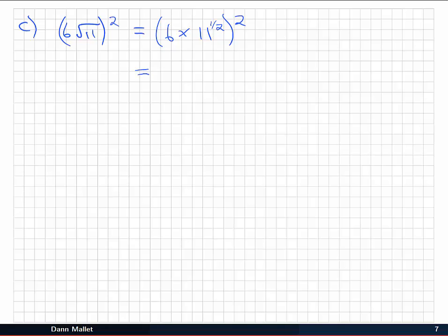I'll use my index laws to pull that 2 inside the bracket. I'll have 6 squared and 11 to the 1/2 times 2. 6 squared is 36, and 11 to the 1/2 times 2, or 1, is going to be just 11. Now that one you can multiply out, either in your head or in your calculator, and you should get something along the lines of 396.